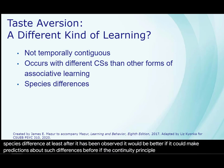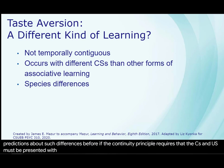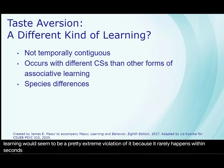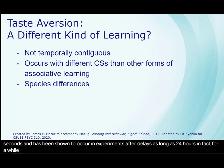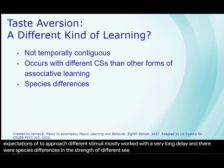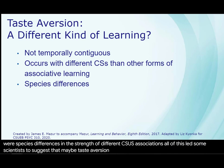If the contiguity principle requires that the CS and US must be presented within seconds of each other for learning to occur, then taste aversion learning would seem to be a pretty extreme violation of it, because it rarely happens within seconds and has been shown to occur after delays as long as 24 hours. In fact, for a while in the 1960s, there seemed to be a lot about taste aversion that didn't conform to expectations of contemporary learning theories. It seemed to occur with different stimuli, mostly worked with a very long delay, and there were species differences in the strength of different CS-US associations. All of this led some scientists to suggest that maybe taste aversion learning was just a different type of learning than other classical conditioning.